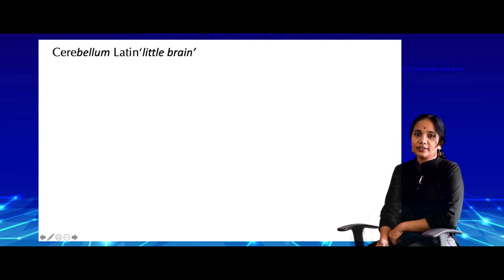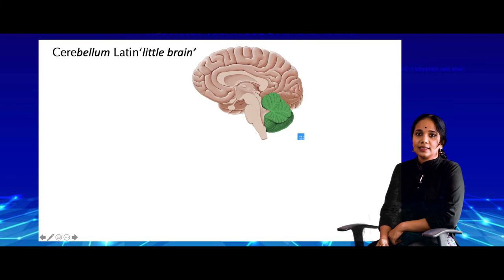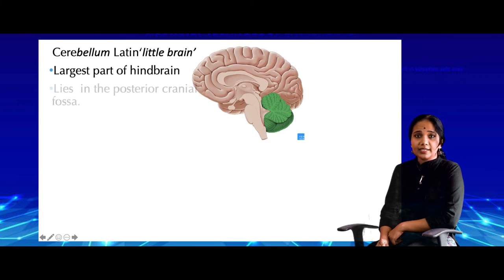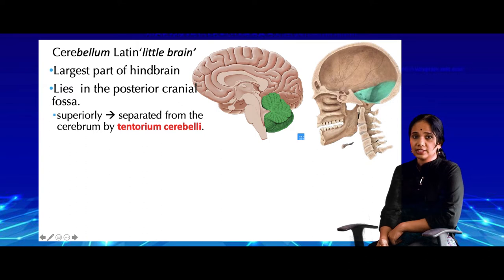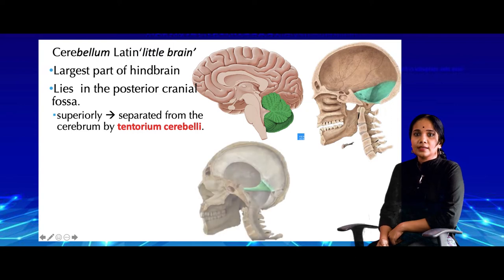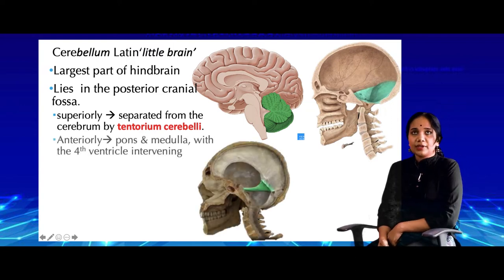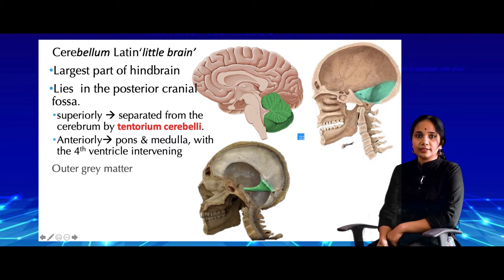The cerebellum is also called the 'little brain' in Latin. It is the largest part of the hindbrain and lies in the posterior cranial fossa. Superiorly, it is separated from the cerebrum by the tentorium cerebelli, which is a fold of the dura mater. Anteriorly, it is separated from the pons and the medulla by the fourth ventricle.